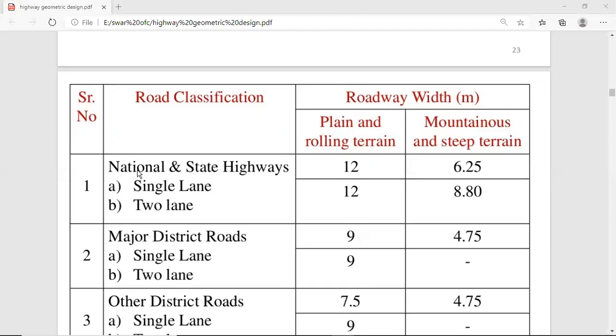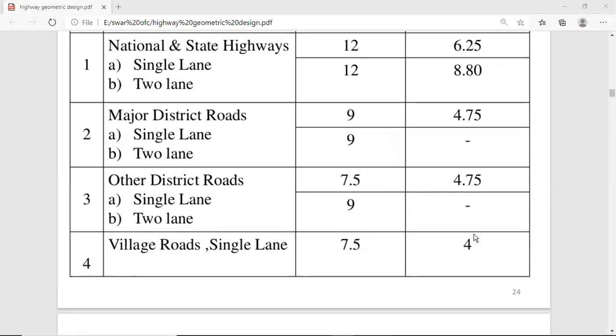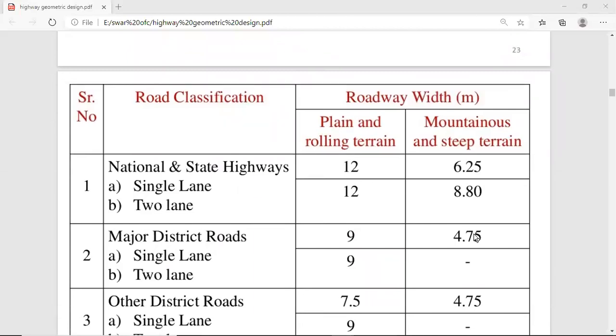Road classification according to IRC - if I talk about national or state highways, single or two lanes according to plain and rolling terrain, mountains and steep terrain, 6.25 and 8.80 meters. If I talk about the major road, single and two lanes, 9-9 for plain and rolling terrain, and 4.75 single lanes for mountain and steep terrain. For other districts roads, single and two lanes, 7.5 and 9 are plain and rolling terrain, and for mountainous and steep terrain, 4.75, only single lanes are given. Village road single lanes, 7.5 for plain and rolling terrain, and for mountainous or steep terrain, 4 meters given here, that the IRC has given for total roadway width.